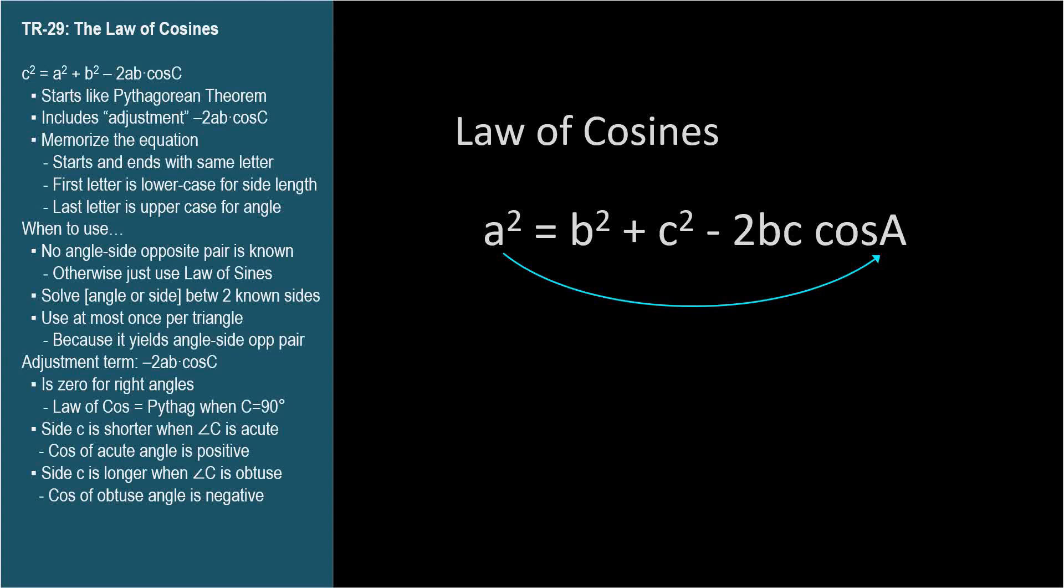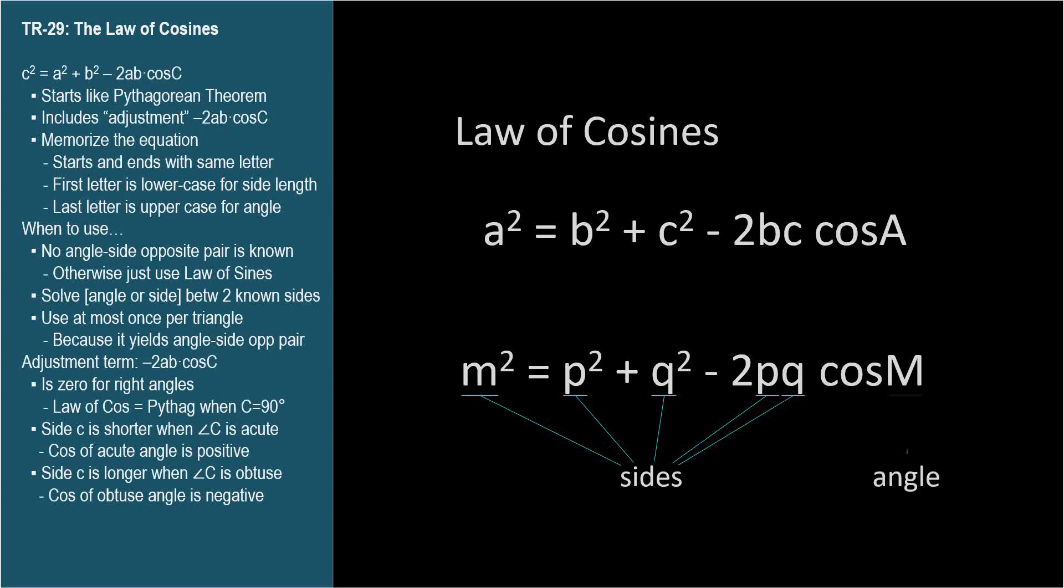Can you finish the Law of Cosine patterns with this setup? Minus 2pq times cosine M. The Law of Cosine includes five side lengths, two are repeated, and one angle, which is the angle opposite the isolated side.